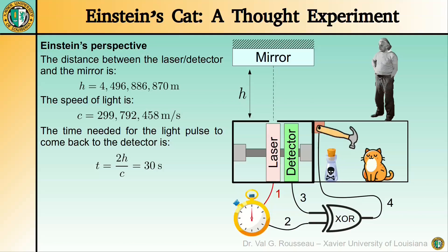From Einstein's point of view, who is at rest relative to the device, the light goes up and down in 30 seconds. The stopwatch also takes 30 seconds, so everything is perfectly synchronized. The XOR logic gate sees no mismatch and the poison is not released. Tiger survives.